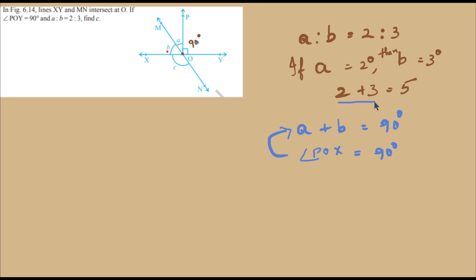If 2 plus 3 is 5, we can find angles A and B in the ratio 2 to 3. Angle A equals 2 parts of 5 multiplied by 90 degrees. That's 2 over 5 times 90, which gives us 18 times 2, equaling 36 degrees.